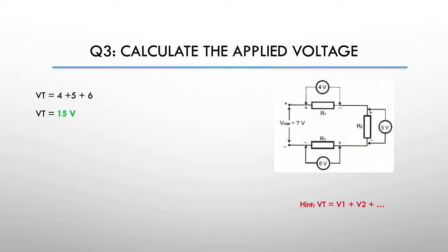So here's our answer. Volts total is 4 plus 5 plus 6 because they're the respective voltage drops around this particular circuit. Giving us a volts total of 15 volts.